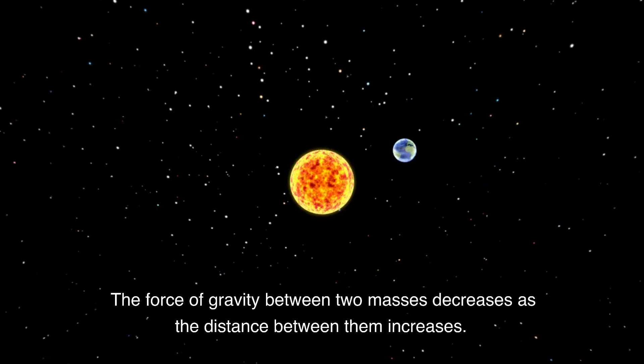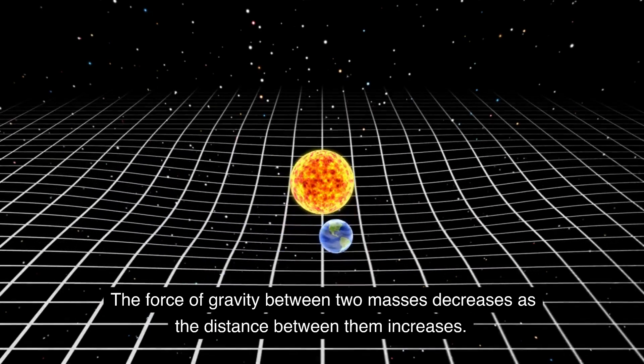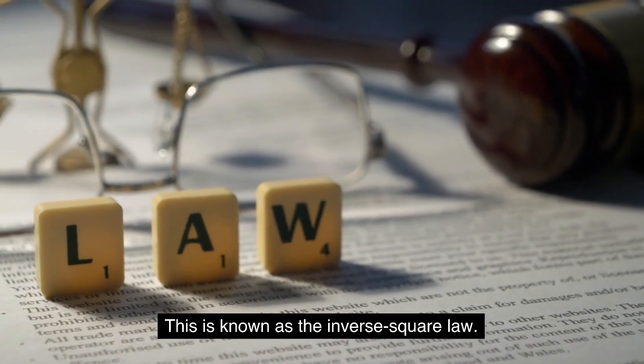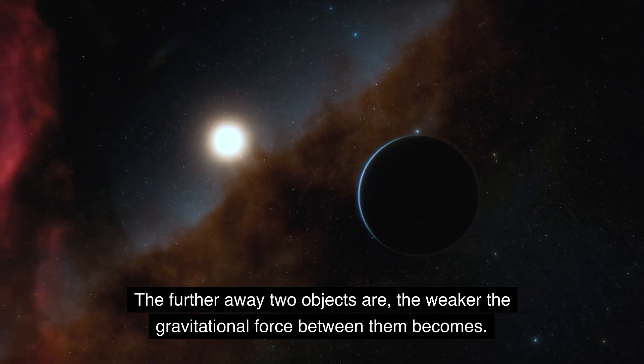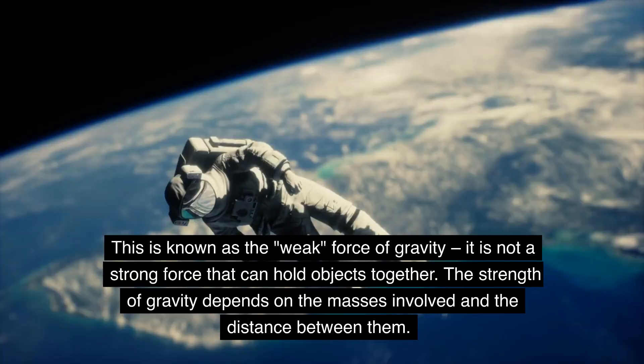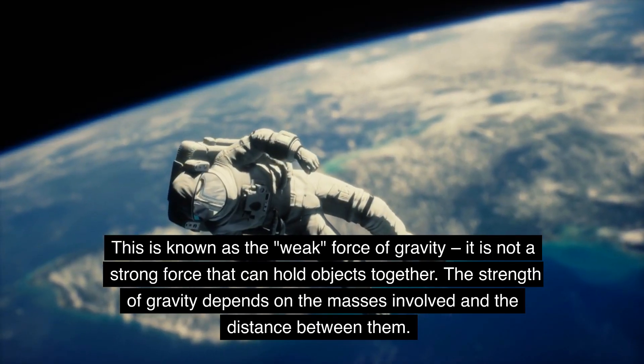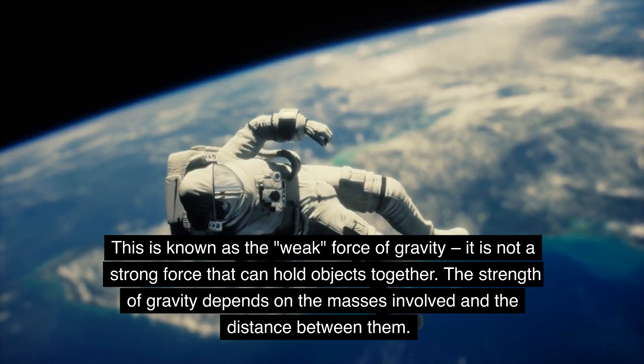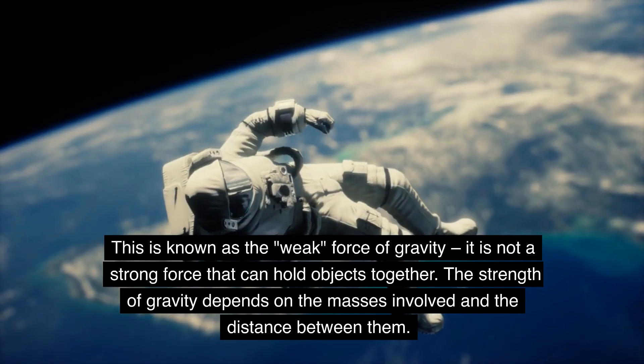The force of gravity between two masses decreases as the distance between them increases. This is known as the inverse square law. The further away two objects are, the weaker the gravitational force between them becomes. This is known as the weak force of gravity; it is not a strong force that can hold objects together. The strength of gravity depends on the masses involved and the distance between them.